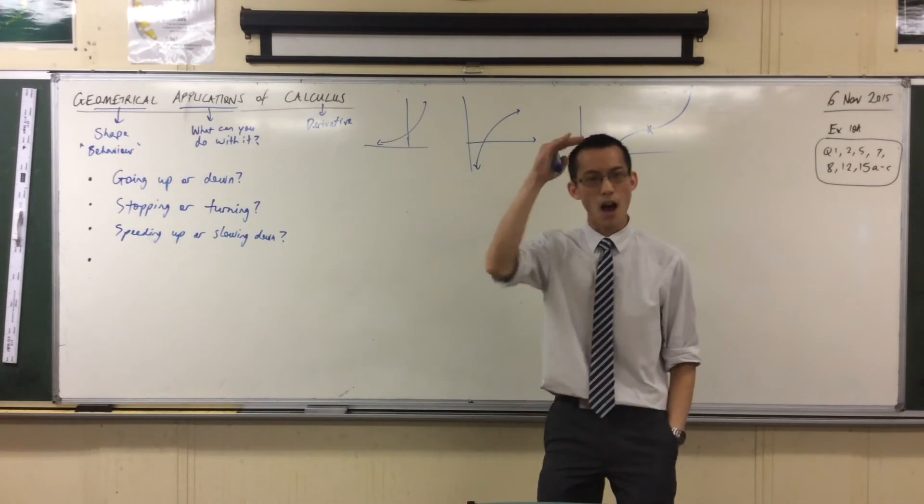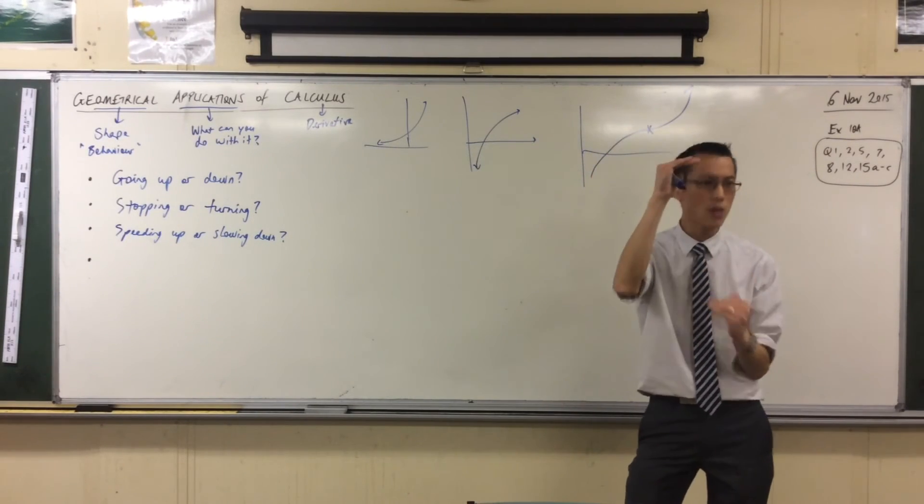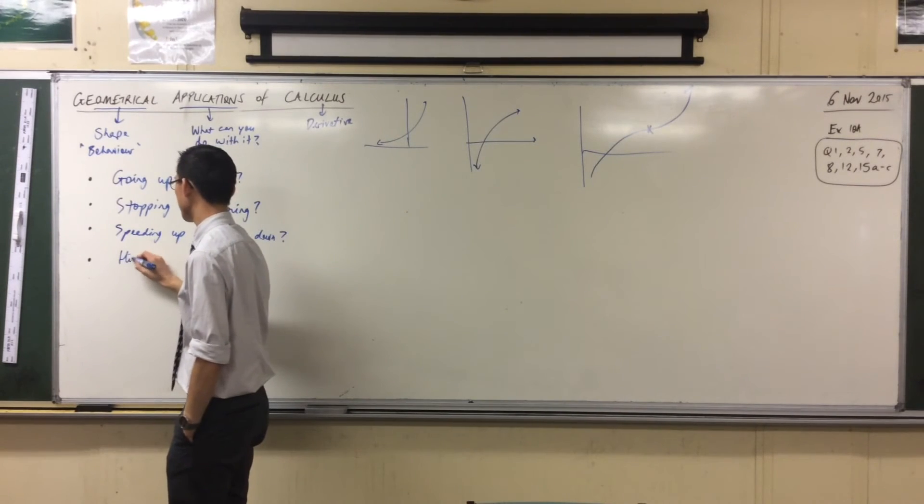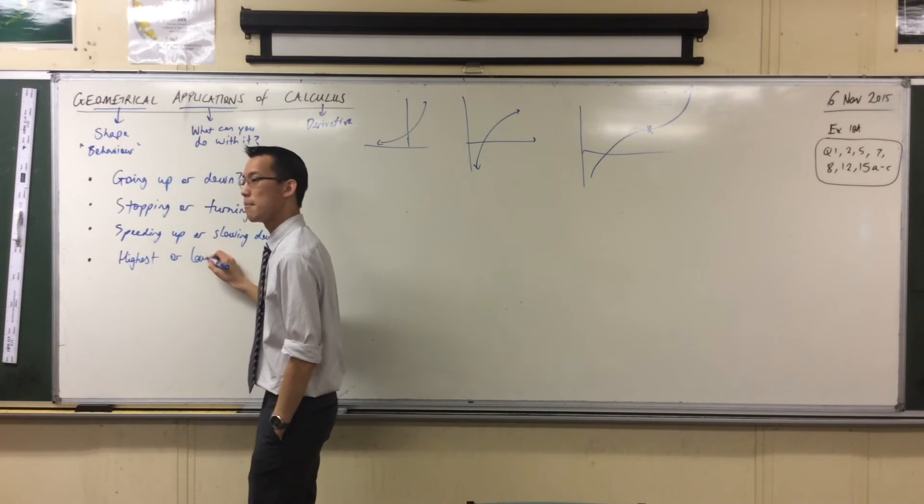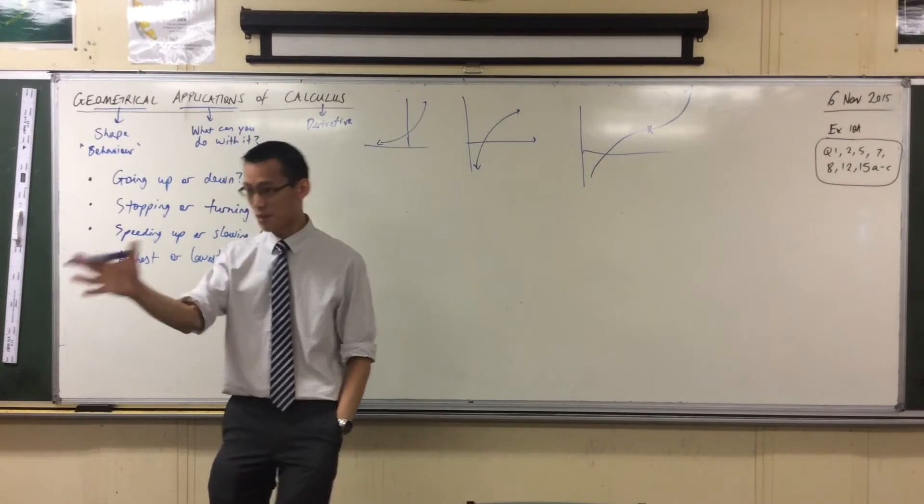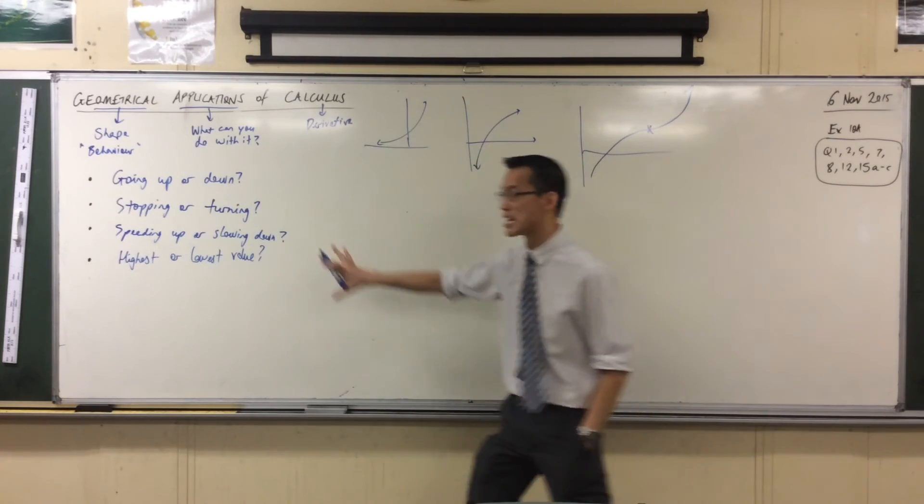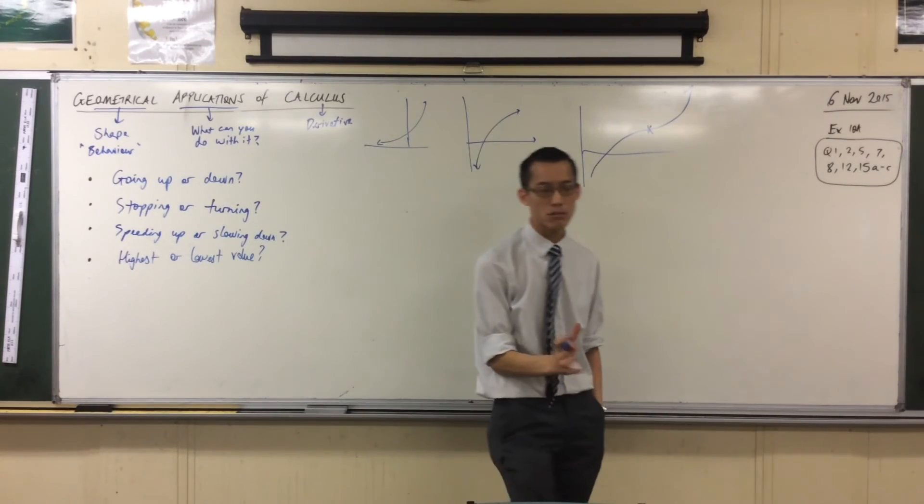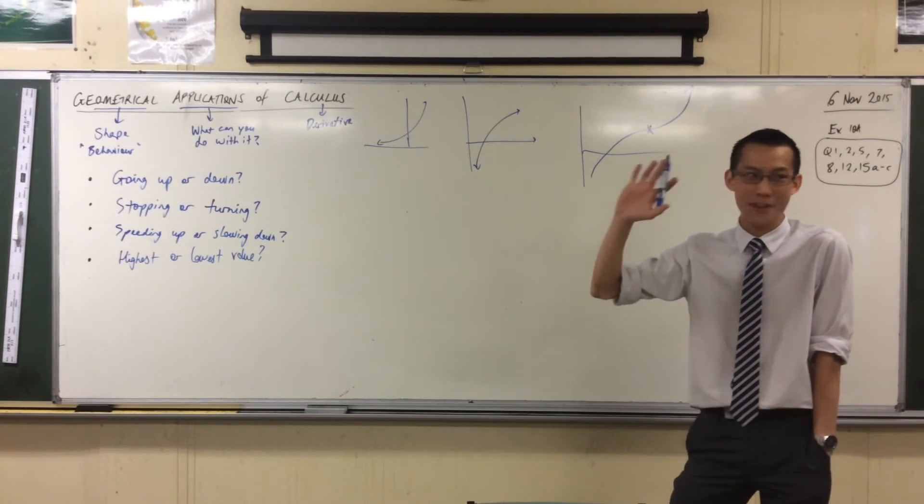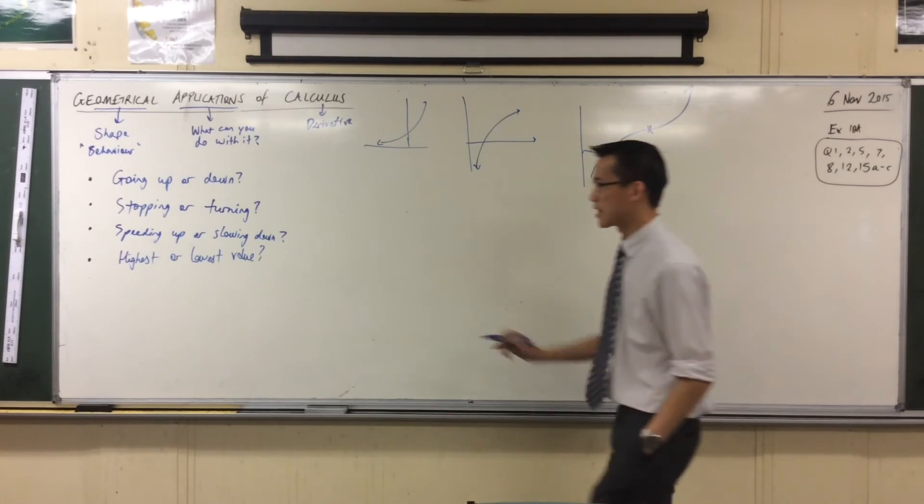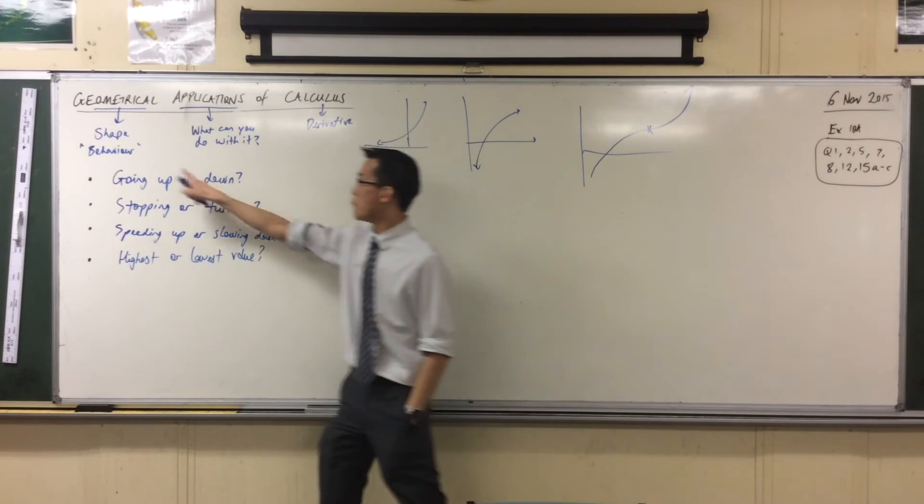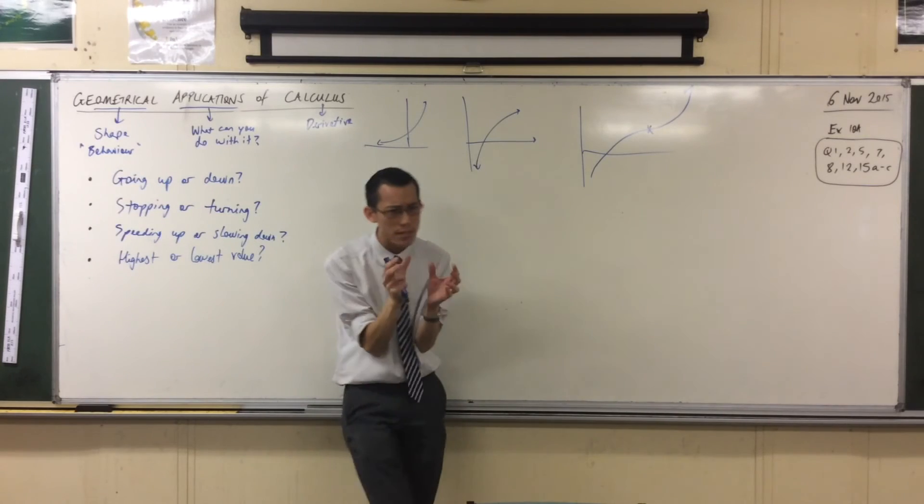One last geometric idea: up or down, stopping, turning, speeding, slowing. The last question is what's the highest you get and what's the lowest you get? Highest or lowest value. I'm trying to get across what the ideas are. These are all just shape ideas, geometric ideas, behavior ideas.